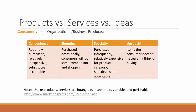Let's look further at the concept of consumer products. We can classify consumer products as either convenience, shopping, specialty, or unsought. The reason we classify consumer products is that there are similarities in the way we market convenience products that differ from the ways we market shopping or specialty products. So identifying what type of product you're selling can give you ideas on how to market it.